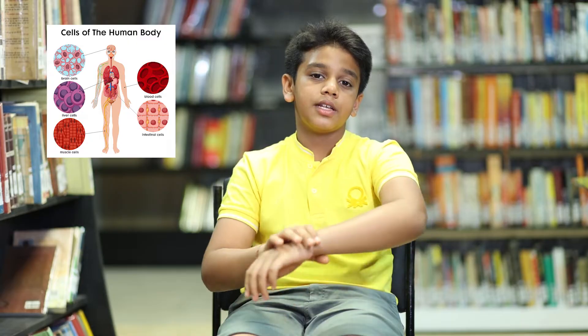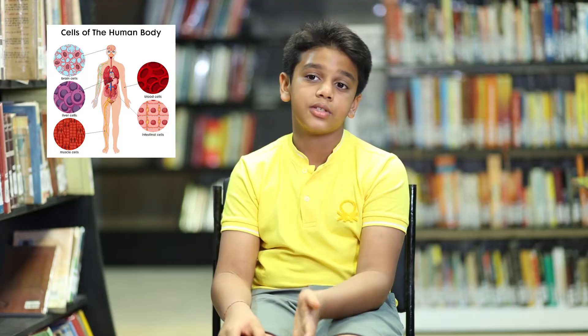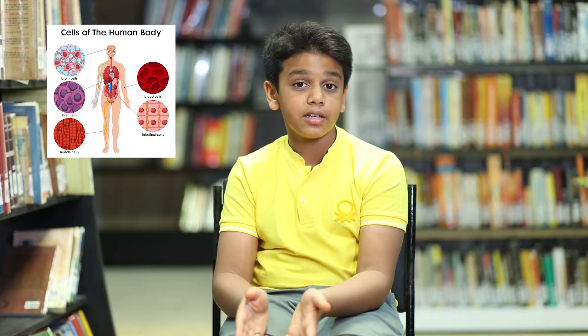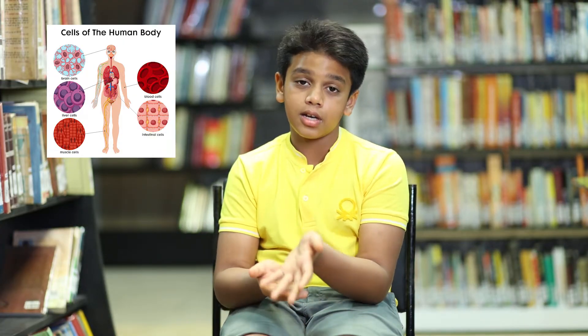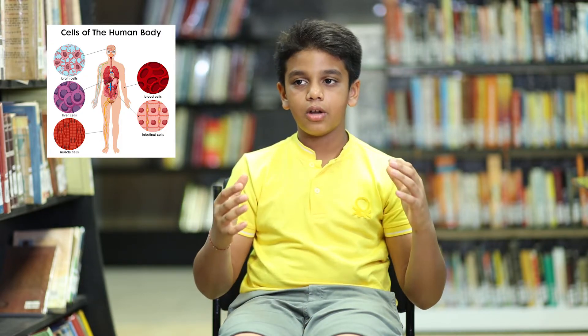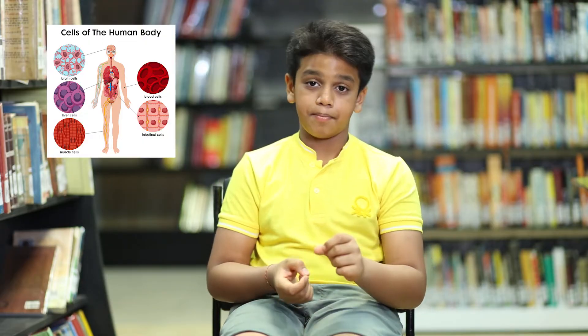My arm's shape is due to cells, my legs' shape is due to cells — every part of the body is made of cells, which give it its shape. Anthony Leeuwenhoek in 1674 studied unicellular organisms using the advanced compound microscope.